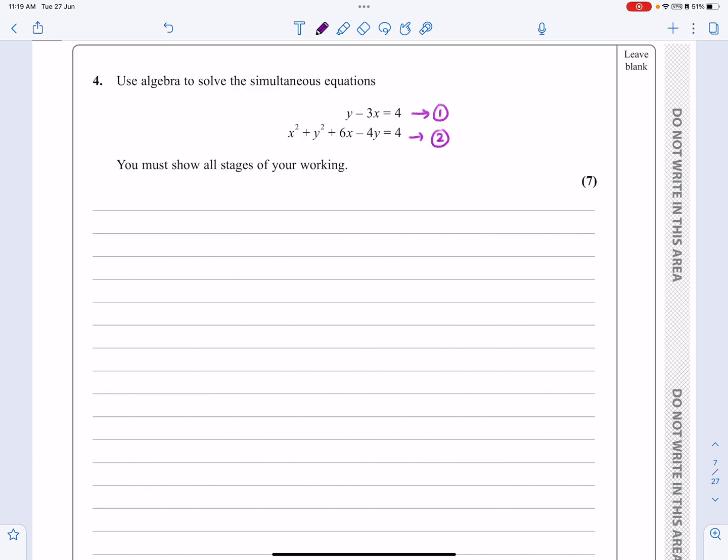Let's get started. From equation one: y - 3x = 4, which gives me y = 3x + 4.